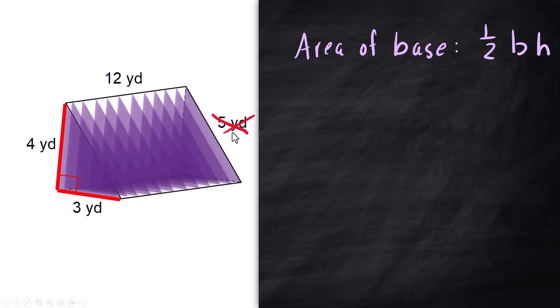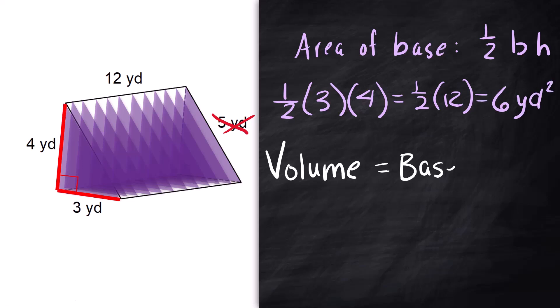We are not going to use this 5. That's the slant height. This would be the hypotenuse of that right triangle. We don't need that for this formula. So one half times 3 times 4 would be one half times 12 and that gives us 6 square yards. The volume is going to be that base area which is 6 times the depth which is 12 and so we're going to take 6 times 12 and we get 72 cubic yards.